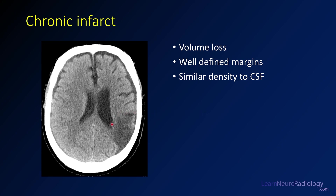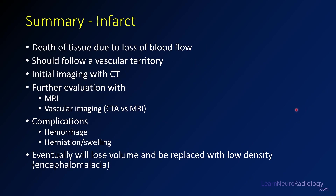This is what a chronic infarct looks like — a different patient, also an MCA infarct but subtotal. You see a small area that's lower density, closer to the density of the ventricle, with some ex-vacuo dilation of the ventricle and well-defined margins — that helps you recognize a chronic infarct. In summary: infarct is death of tissue due to loss of blood flow. It follows a vascular territory. We do CT first, then follow up with MRI and vascular imaging. Be aware of complications such as hemorrhage, herniation, and eventually volume loss — what we call encephalomalacia.